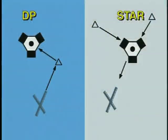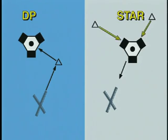Standard terminal arrival routes, or STARs, use similar charting conventions as departure procedures. Unlike departure procedures, which help you navigate from an airport to the en route structure, STARs take you from the en route structure down to the vicinity of an airport. They terminate at a fix or NAVAID from which you can begin an instrument approach procedure, or at a position where ATC can vector you for an approach.